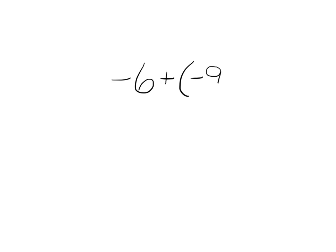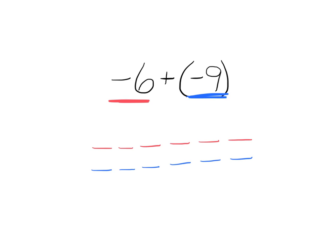Let's look at one more. Let's solve the problem negative six plus negative nine. We're going to follow the same three steps. Starting with step one — draw a picture — we have six negatives, then nine more negatives. Now step two is to cancel any positives and negatives, but we don't have any positives in this situation. All we have is a whole bunch of negatives, so nothing will cancel.